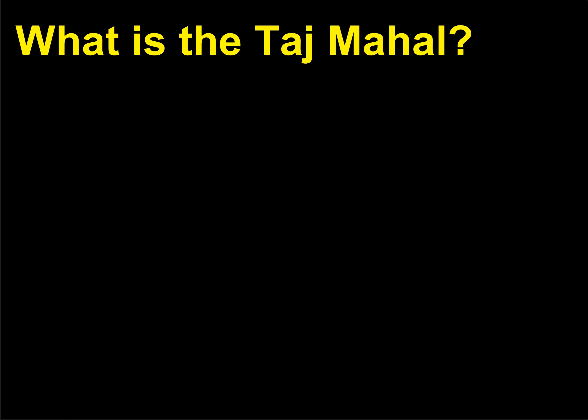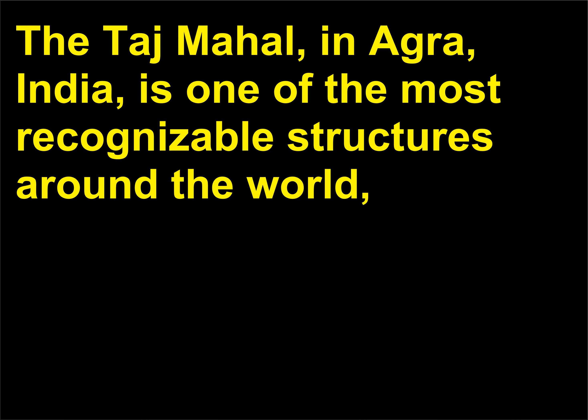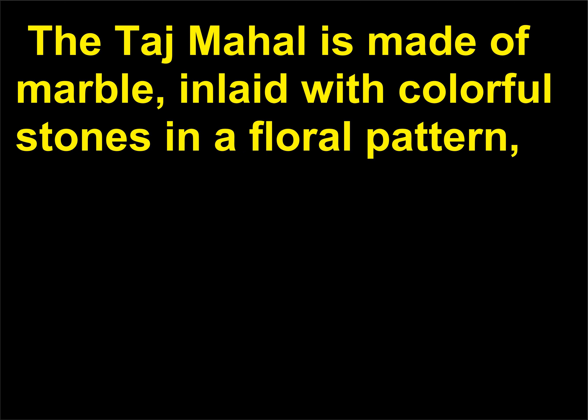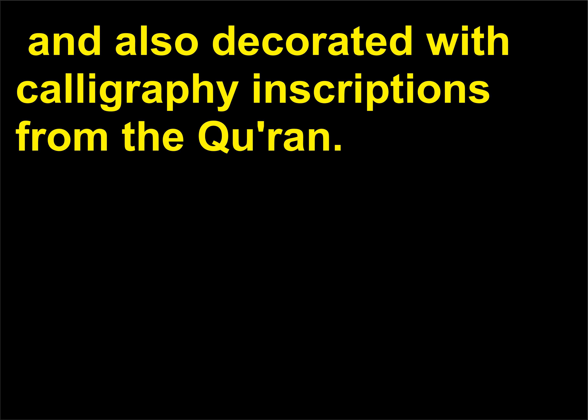What is the Taj Mahal? The Taj Mahal, in Agra, India, is one of the most recognizable structures around the world. With its white onion-shaped domes, arched windows, and long reflective pool, the Taj Mahal is made of marble, inlaid with colorful stones in a floral pattern, and also decorated with calligraphy inscriptions from the Quran.